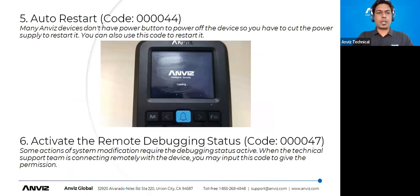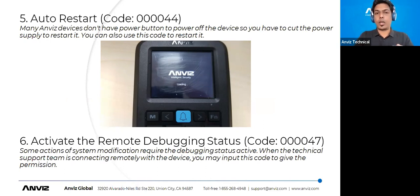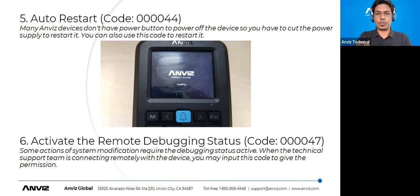Many Anviz devices don't have a power button. Cutting the power supply or removing the battery is not the right way to handle the device. Instead, use test code 000044 and press OK — the device will recycle the power and restart. So if your device does not have a power button to turn it off, you can use this test code to restart the device.